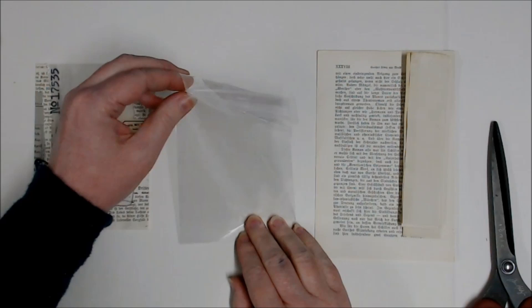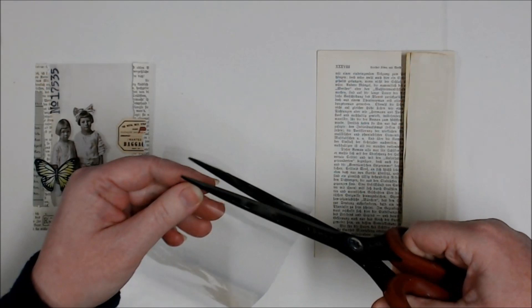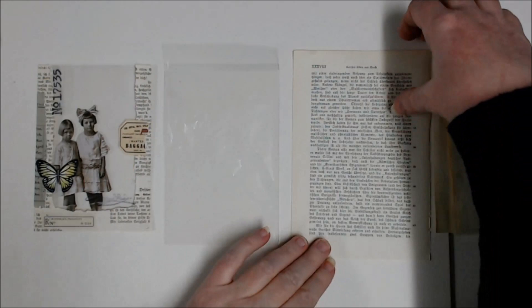To begin I'm going to take my cellophane bag and I've got a sticky edge on here so I'm just going to roughly cut that off. It doesn't need to be straight or anything at this point but I just don't want it to stick to everything.